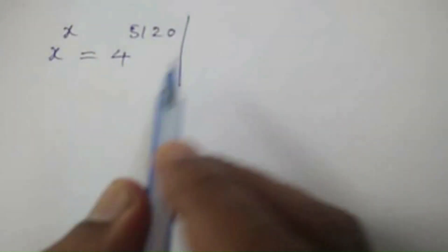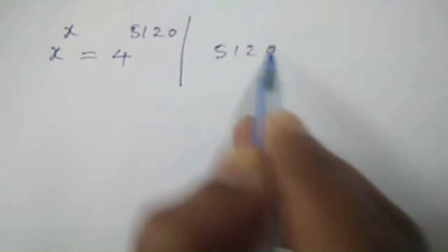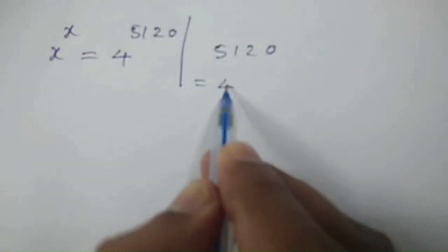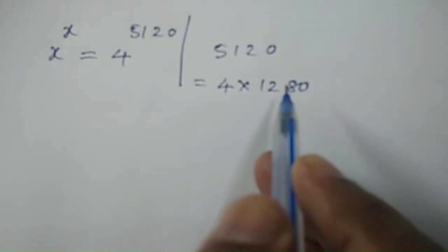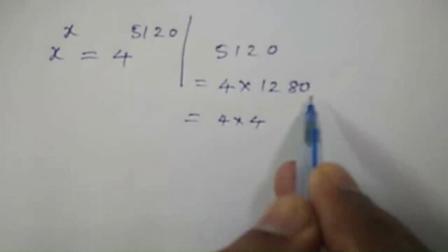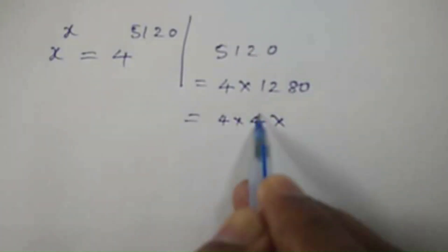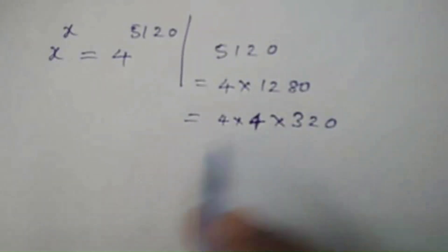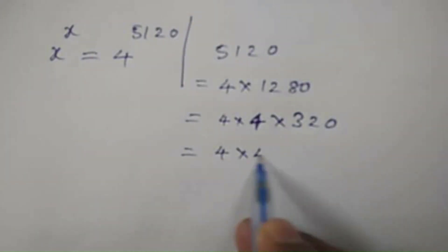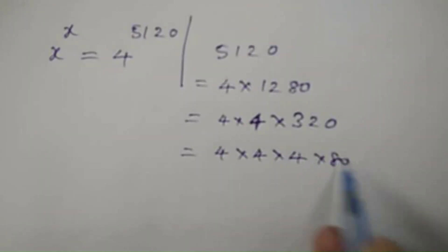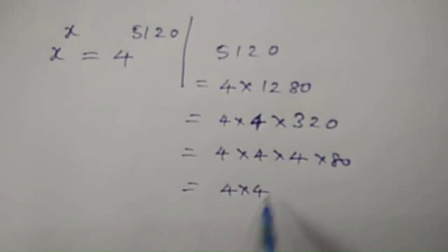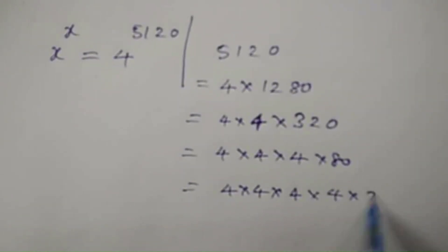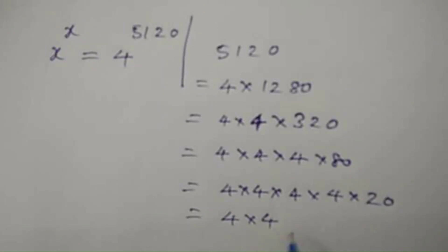Here we can write 5120 as 4 into 1280. Again, this 1280 can be written as 4 into 320. Again, 4 into 4 into 4 into 80. Again, this 80 can be written as 4 into 20, giving us 4 into 4 into 4 into 4 into 20. This 20 also can be written as 4 into 5, giving us 4 into 4 into 4 into 4 into 4 into 5.